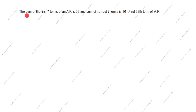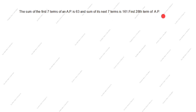Hi friends, welcome to my channel 'Excellent Ideas in Education'. Today we are going to learn about an arithmetic progression problem. The problem is: the sum of the first seven terms of an AP is 63, and the sum of its next seven terms is 161. Find the 28th term of the AP.